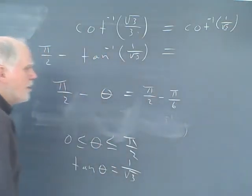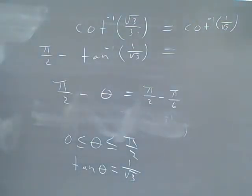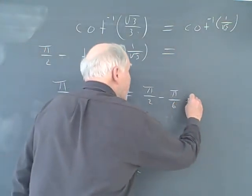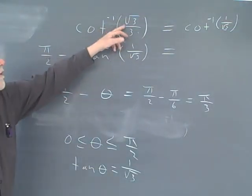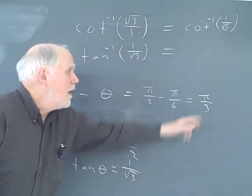And pi over 2 minus pi over 6 gives me, let's see, that's 3 pi over 6 minus 2 pi over 6, which is pi over 3. I had to think for a second. But that's pi over 3, and that's my answer. So the cotan inverse of root 3 over 3 is pi over 3.